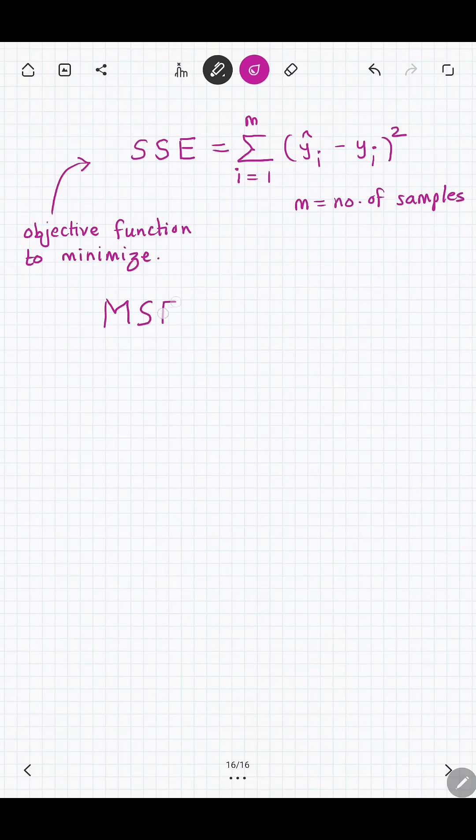However, some authors instead use the mean squared error. Dividing by m merely turns the sum into an average, so that the scale does not grow with the data set size.